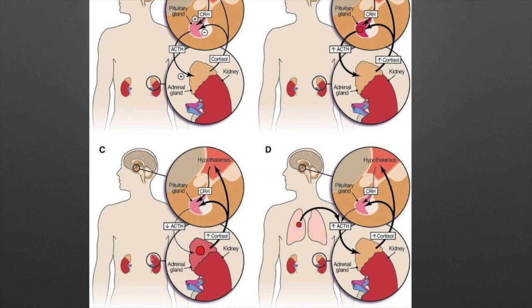That animation does a really good job of showing the normal mechanisms going on with your hormones in a stress response. This visual image is helpful when trying to figure out the mechanisms of endogenous Cushing syndrome in each scenario. Scenario A is when things are going right: the hypothalamus releases CRH or CRF, which signals the pituitary to release ACTH, which signals the adrenals to release cortisol. Cortisol then feeds back so that CRH and ACTH production stops.